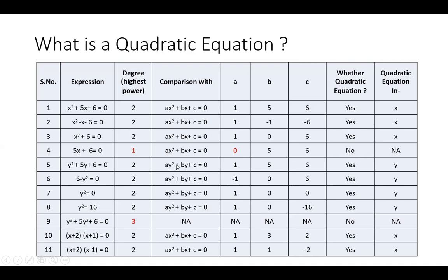Secondly, we will find out the values of a, b, and c from the given expression. Here a is equal to 1, b is equal to 5, and c is equal to 6. When we compare with ay² + by + c = 0, we get the values of a, b, and c as -1, 0, and 6 respectively.